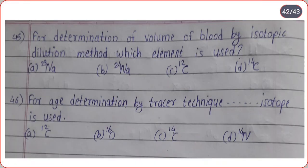For determination of volume of blood by isotopic dilution method, which element is used? Options are sodium-23, sodium-24, carbon-12, carbon-14. Correct option is option B, sodium-24.